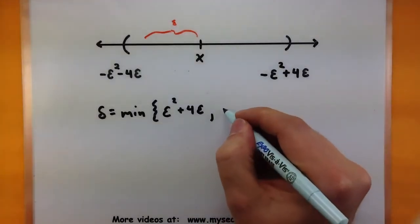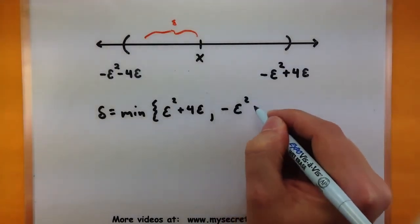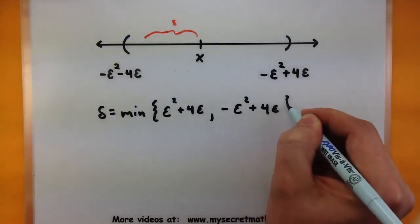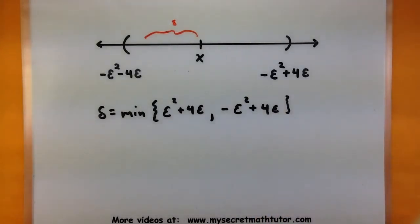And for the other one, it's a positive number, so I'll leave it as it is. So I need to choose delta to be the minimum of these two values. And whichever one turns out to be the smallest, that's the one I'm going to use.